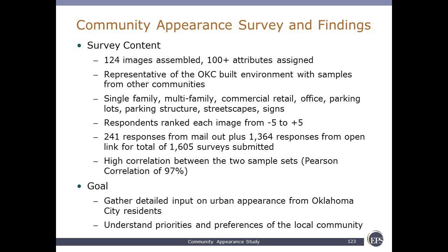In terms of the methodology, we had a survey with 124 images. Within those images there were specific attributes, with over 100 attributes identified. They were all represented in the Oklahoma City environment — most were taken from the Oklahoma City context. Each respondent ranked each image on a scale of negative five to positive five, so each image has a score associated with it.